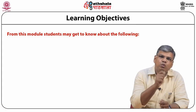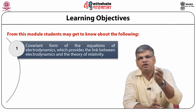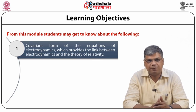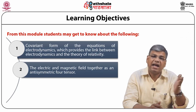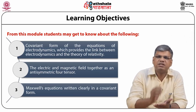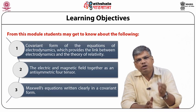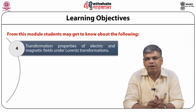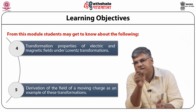From this module, you will get to know about the following. Firstly, you will understand the covariant form of the equations of electrodynamics which provides the link between electrodynamics and the special theory of relativity. Then, we will discuss the electric and the magnetic field together as an anti-symmetric 4-tensor of rank 2. After that, we will discuss Maxwell's equations written in a covariant form. Then, we will talk about the transformation properties of the electric and the magnetic fields under Lorentz transformations, and we will do the derivation of the field of a moving charge as an example of these transformations.